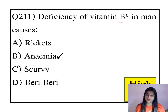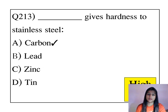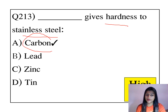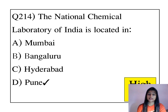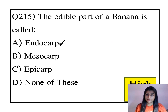Deficiency of vitamin B6 in humans causes anemia. Calorie is the unit of heat. Carbon gives hardness to stainless steel. The National Chemical Laboratory of India is located in Pune.